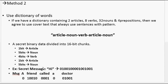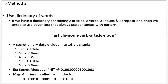Consider an example: a secret message 'hi' can be sent by encapsulating it within the message 'a friend called a doctor.' We can see that this message is of the form: article, noun, verb, article, and noun, where 'a' is the article, 'friend' is the noun, 'called' is the verb, and so on. The message is first divided into 16-bit chunks of binary data, and then divided into one bit, five bits, four bits, one bit, and five bits respectively, in order to store in article, noun, verb, article, and noun as clearly shown in the diagram.